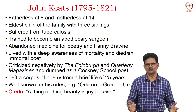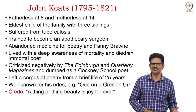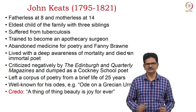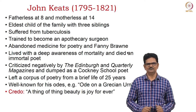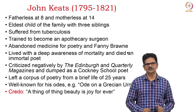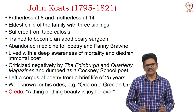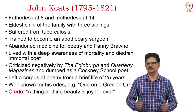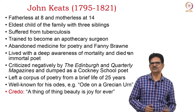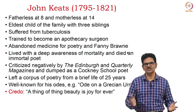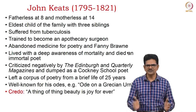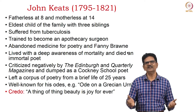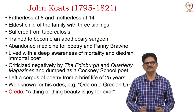In his own lifetime, when he published his poems, he was seriously and negatively criticized by the reviewers of Edinburgh and Quarterly magazines. He was treated as a Cockney School poet. But he has left a corpus of poetry from a brief life of twenty-five years. Some of his well-known works are 'Ode on a Grecian Urn,' 'Ode to a Nightingale,' 'To Autumn,' and others. His poetic credo can be understood from this line: 'A thing of beauty is a joy forever.' Beauty, truth, and goodness were very important for poets like Keats.